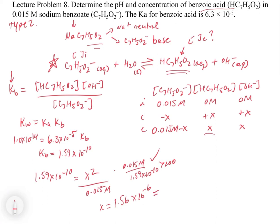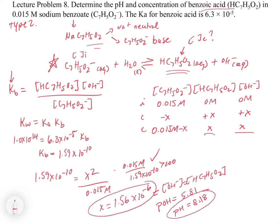We have to remember what x is. X is the concentration of hydroxide and the concentration of benzoic acid. So the concentration of benzoic acid is 1.56 times 10 to the minus 6. To get the pH, we convert to pOH, which is 5.81, and then pH equals 8.18.